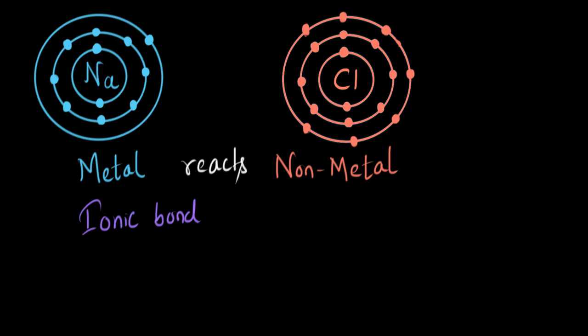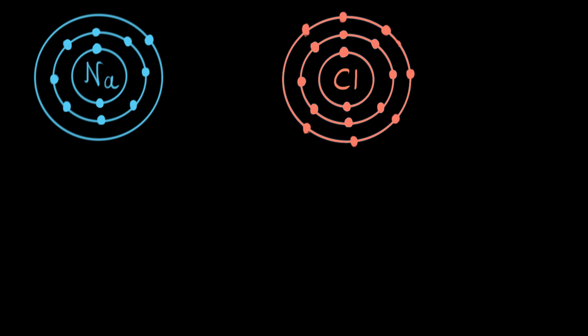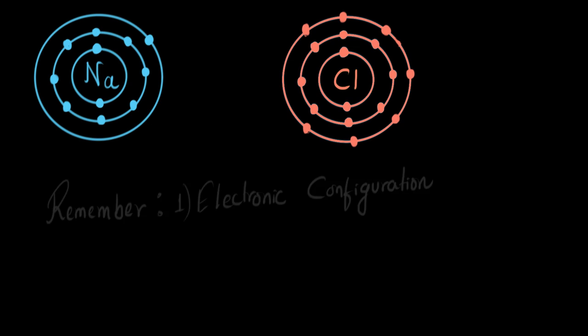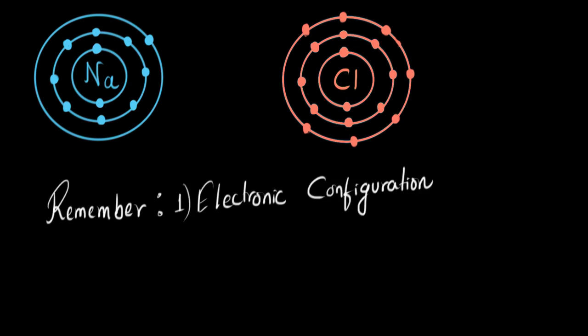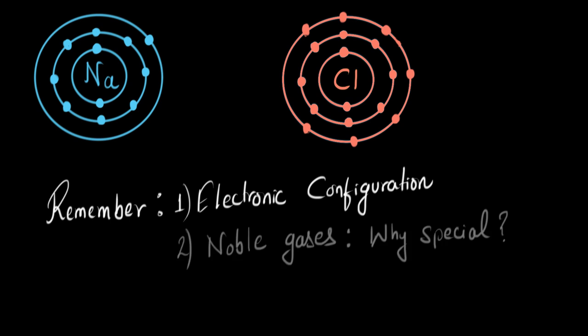Before we start learning about these, we will have to remember a few things. First, how are electrons arranged in an atom — basically the electronic configuration of an atom. And second, what's so special about noble gases?